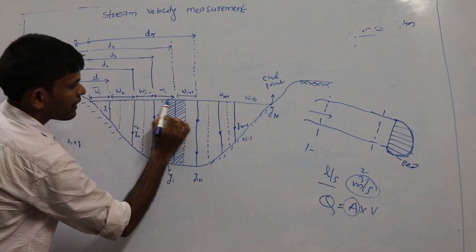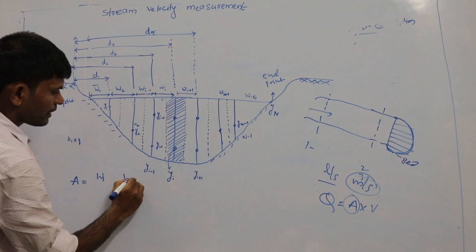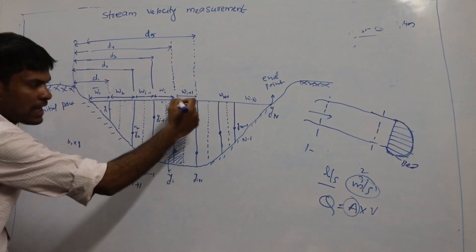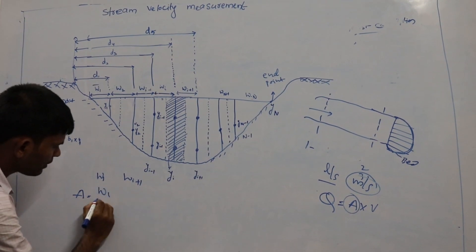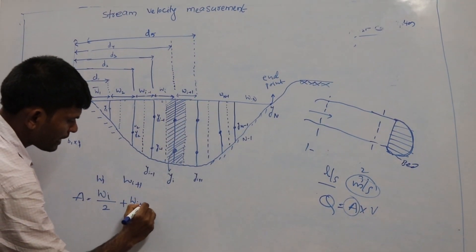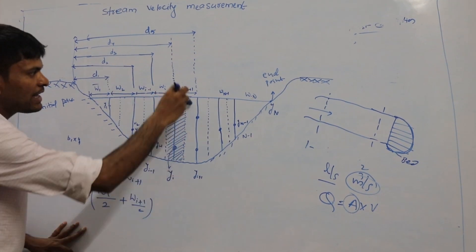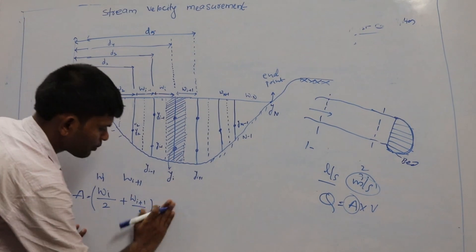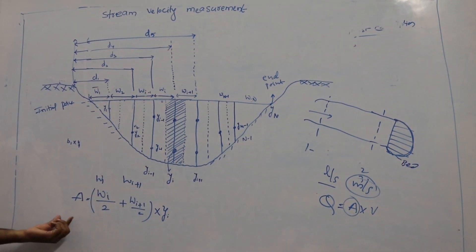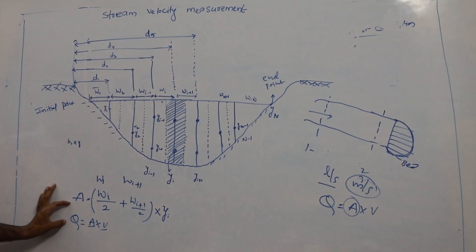For the area at a highlighted point, the formula is: Area = (wi/2 + wi+1/2) × depth, where depth is yi. So the average width multiplied by depth gives you the area. Then using the discharge formula Q = Area × Velocity, you can measure the volume of water flowing through that particular segment.